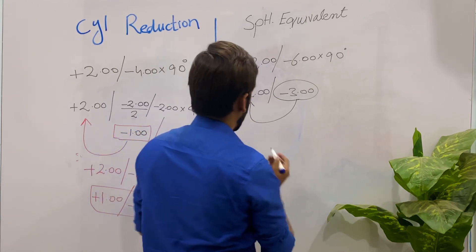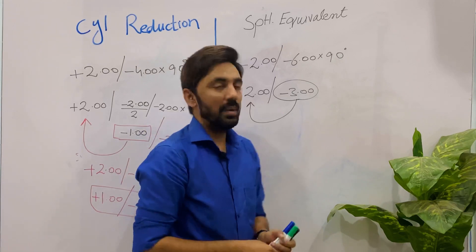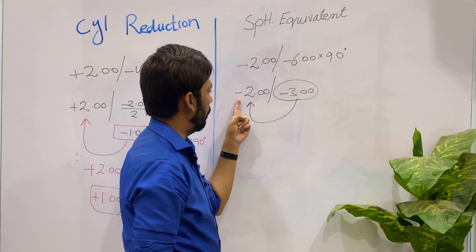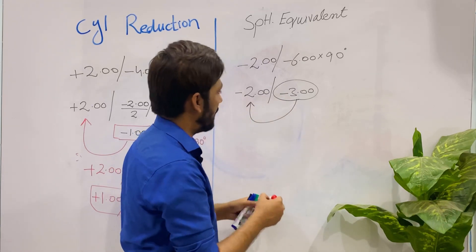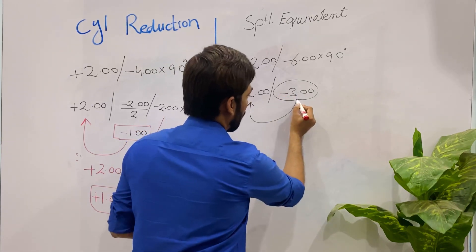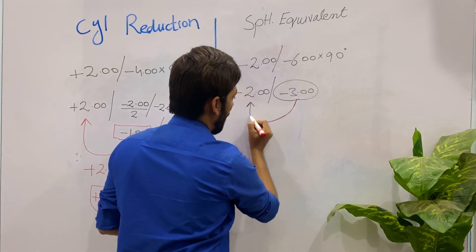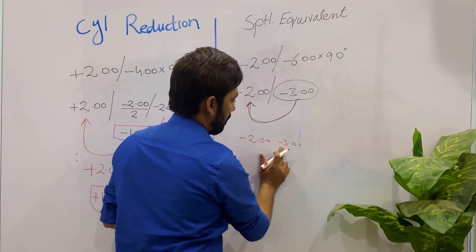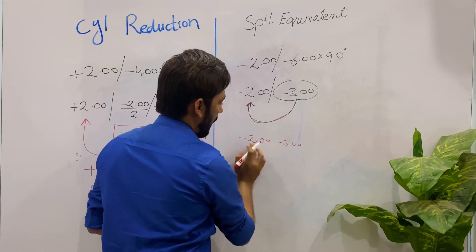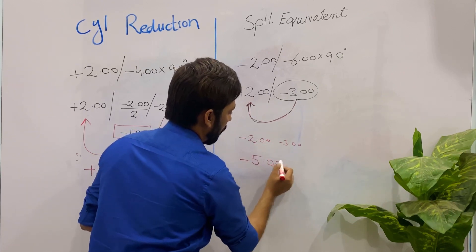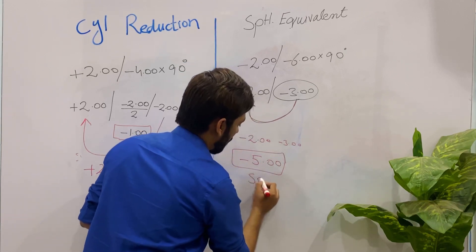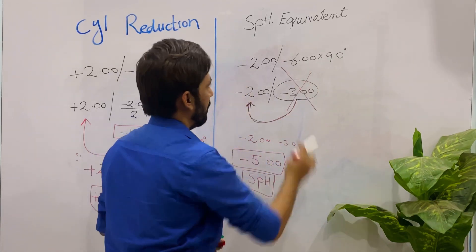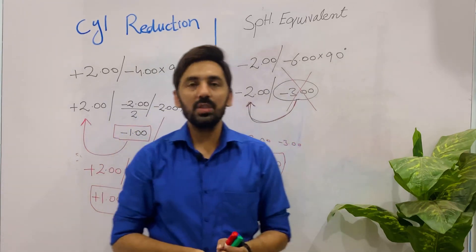This is the point where students make a mistake: you add the half of the cylinder with the same sign. The cylinder is minus, so minus three keeps the minus sign. Minus two plus minus three: minus and minus is plus, so two plus three equals five, giving minus five as the new spherical. And in spherical equivalent, you do not prescribe any cylinder.